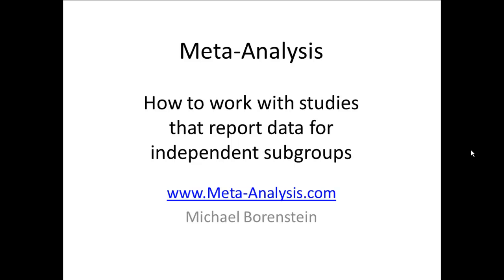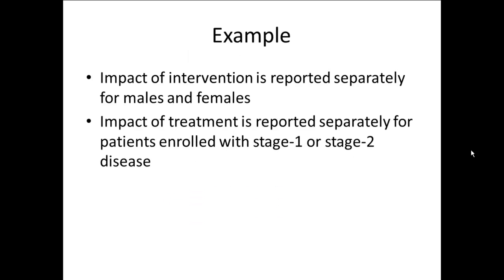Sometimes when we are performing a meta-analysis, we have studies that report data separately for two or more independent subgroups. By independent subgroups, I mean that the people in the study appear in one subgroup or the other, but not both. For example, we might have a study that reports the impact of an intervention — treated versus control — and reports that separately for males and separately for females.